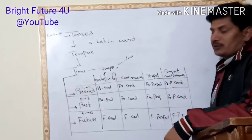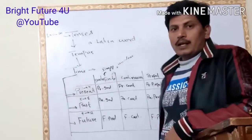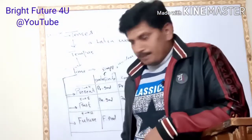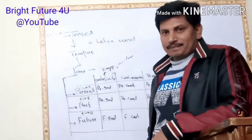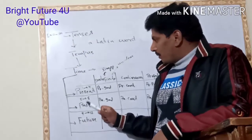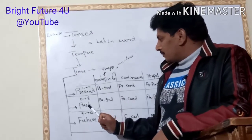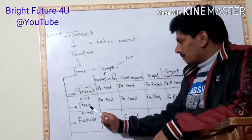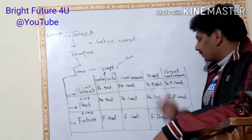Tenses five to eight are related to past tense: past indefinite, past continuous, past perfect, and past perfect continuous.